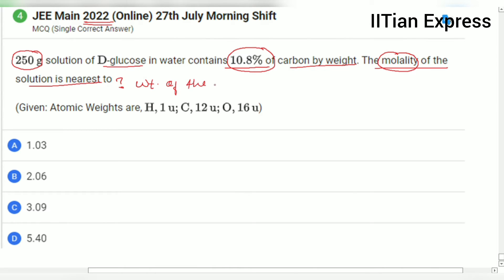Weight of the carbon in D-glucose is equals to 250 divided by 180 multiplied by 72, and it's going to be 100 gram.